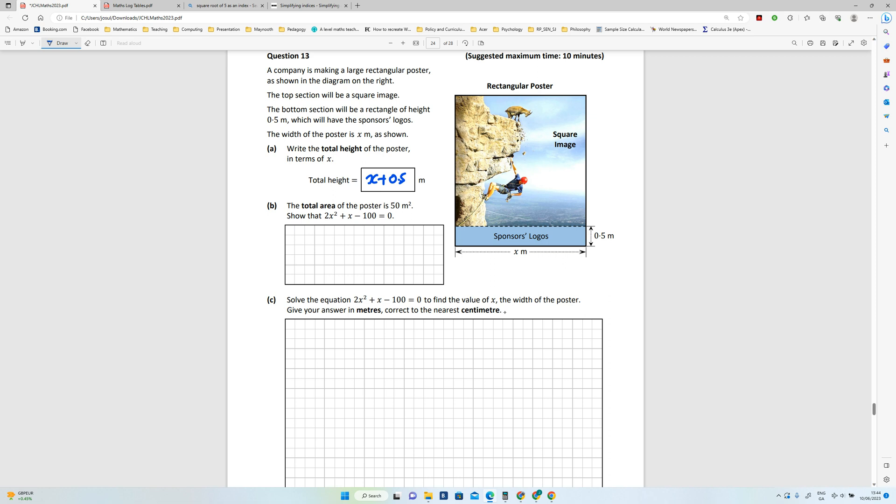So that's that. Part B: The total area of the poster is 50 meters squared, and show that this 2x squared plus x minus 100 equals zero. Right, so let's start with...